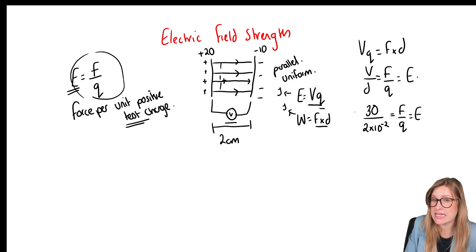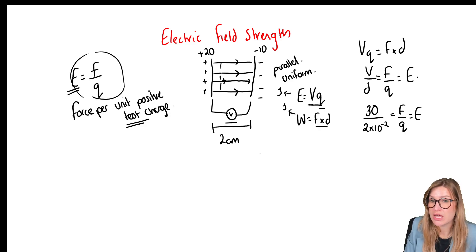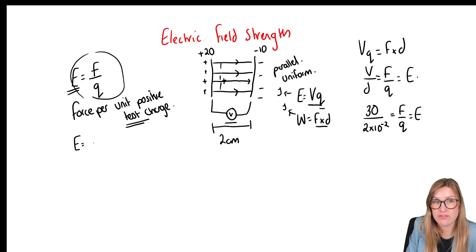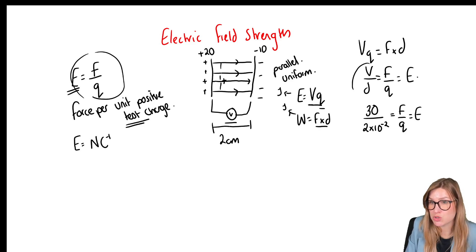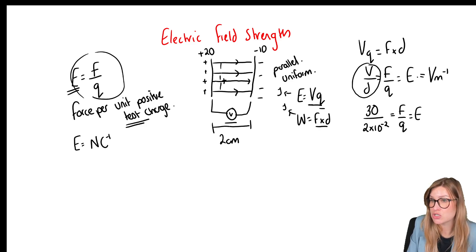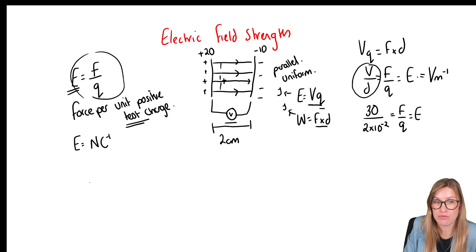There are different units we can use for electric field strength. Because it is force per unit charge, it can be expressed as newtons per coulomb. But because it also equals potential difference divided by distance, it can also be expressed as volts per metre. Either unit can be used.